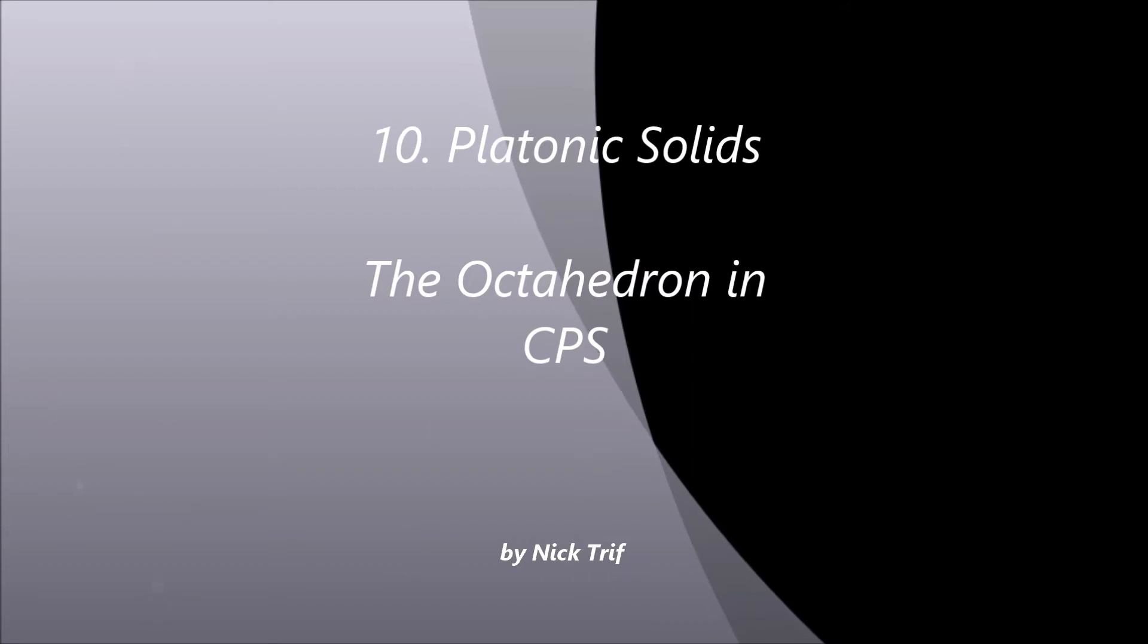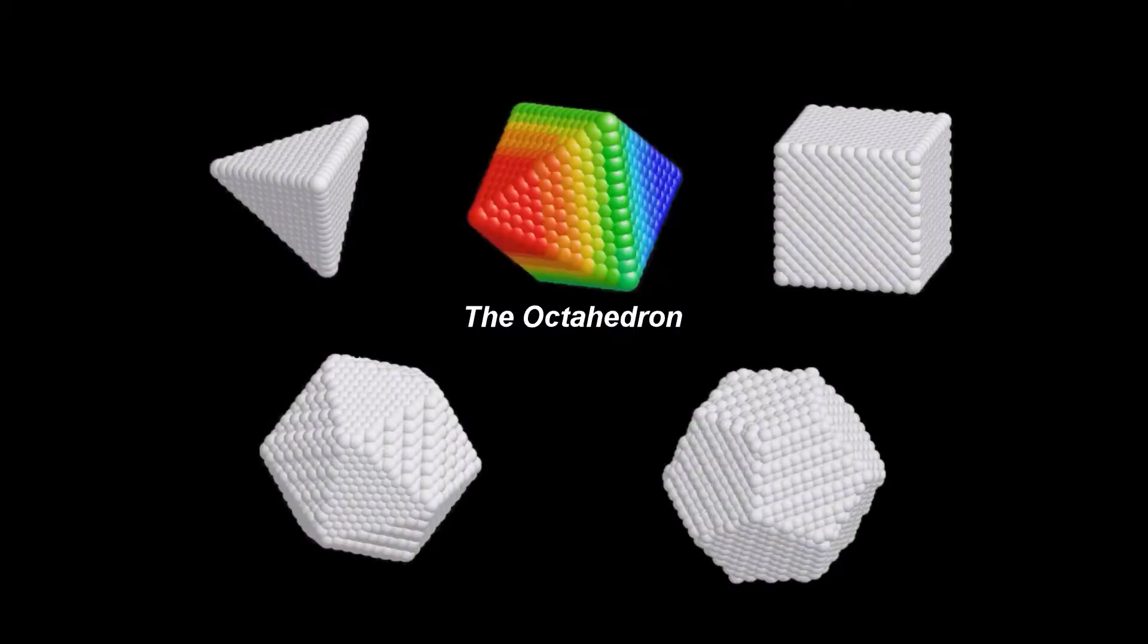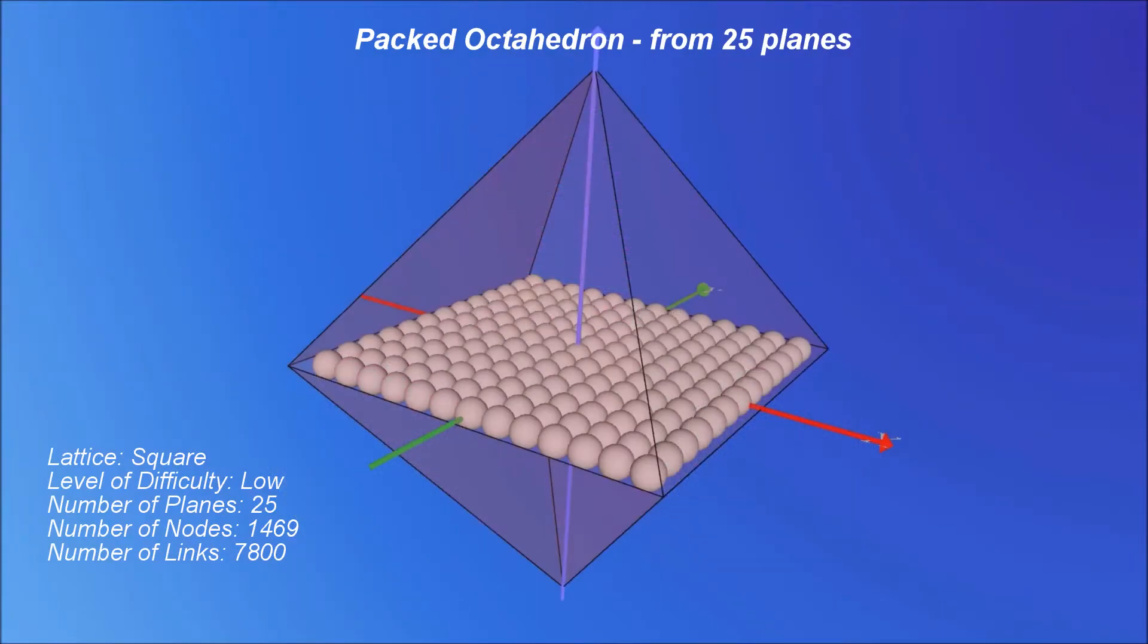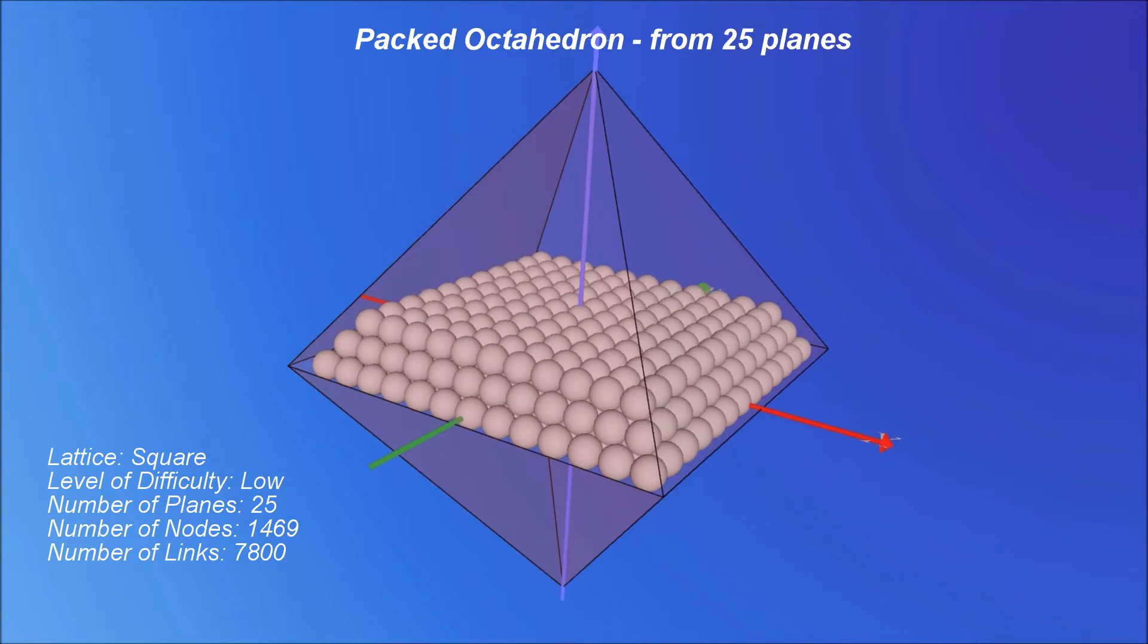Platonic solids: The octahedron in CPS. The octahedron pattern is again relatively easy to spot in the close packing of sphere arrangement.